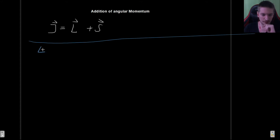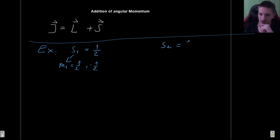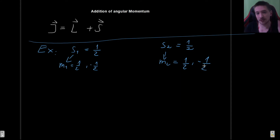Our goal is to find those coefficients, and the best way to do this is with an example. Let's say we have two particles with spin one-half — maybe a proton and an electron like in the hydrogen atom. The main thing is we have spin s1 equal to one-half, which can have values m1 equal to one-half or minus one-half, and another state s2 also with spin one-half, so m2 can also be one-half or minus one-half.